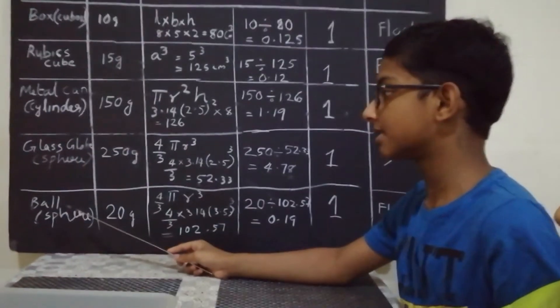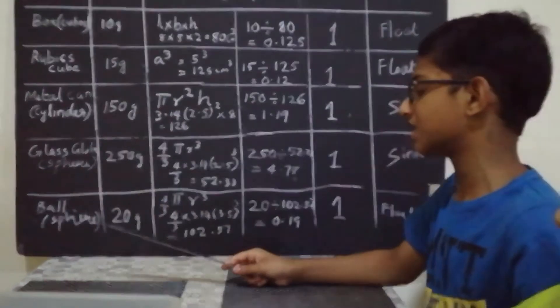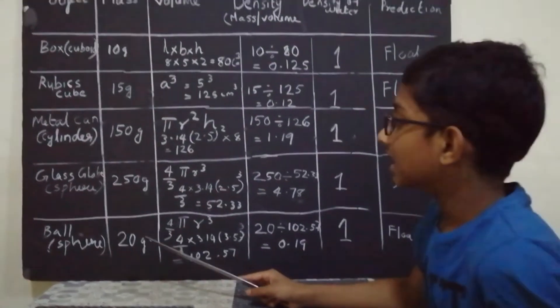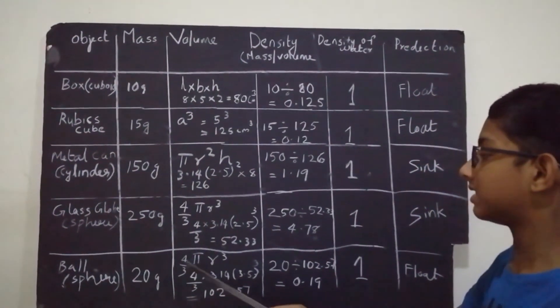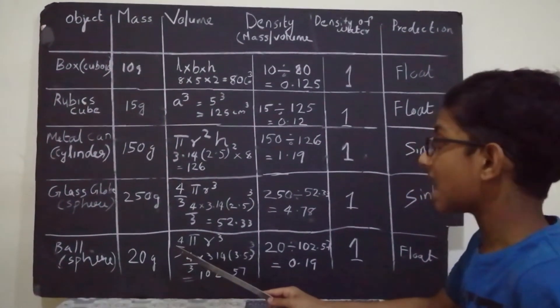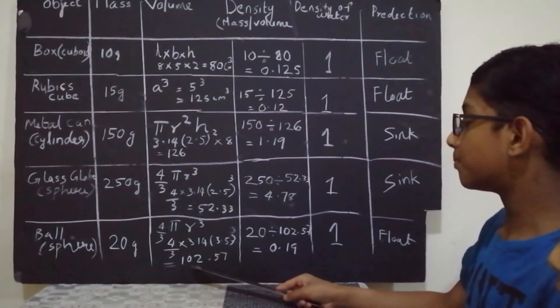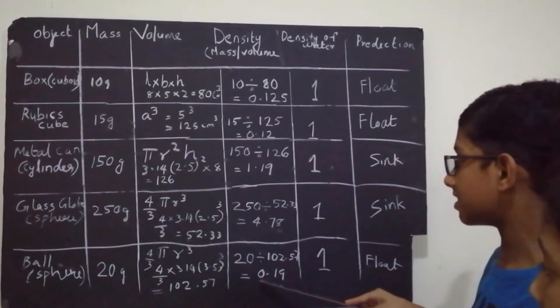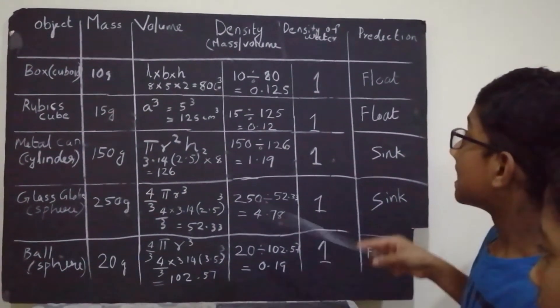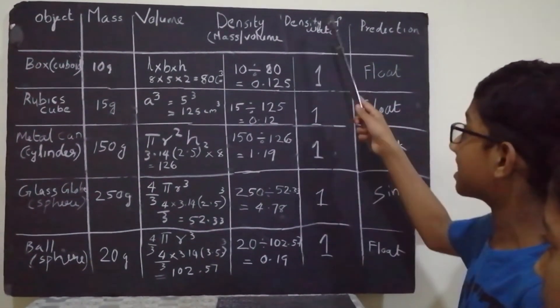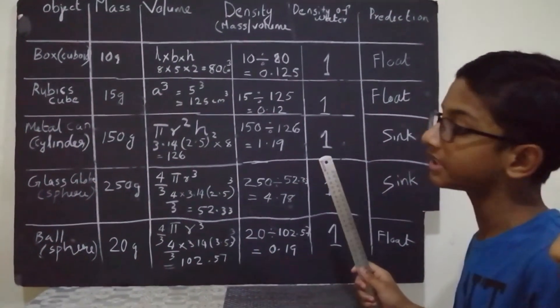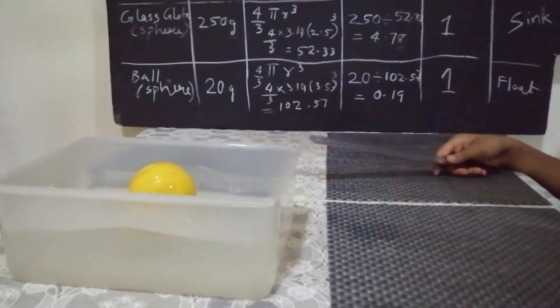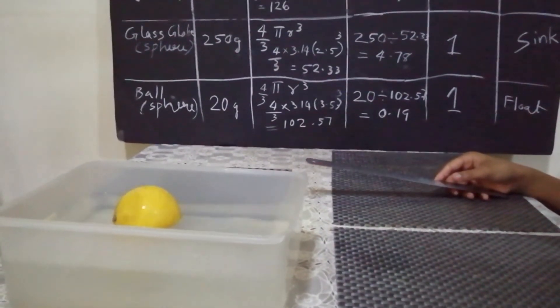The last object is the ball which is also spherical in shape and is 20 grams. The equation is 4 by 3 pi r cubed which is 102.57. The density of this object is 0.19 which is less than the density of water. So it will float in water. Let us check if it is correct. Yes, it is floating in the water.